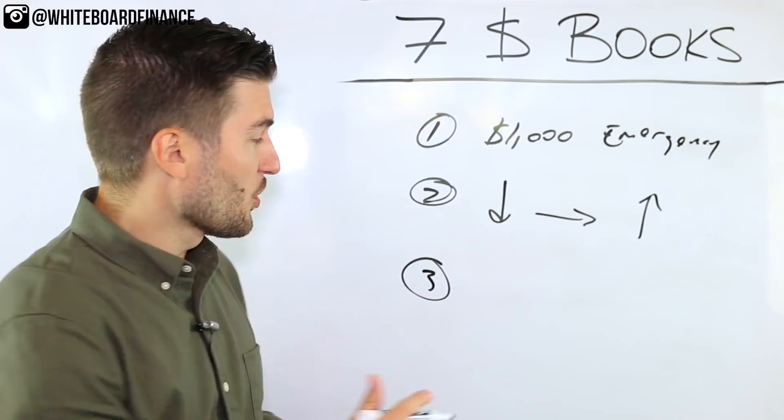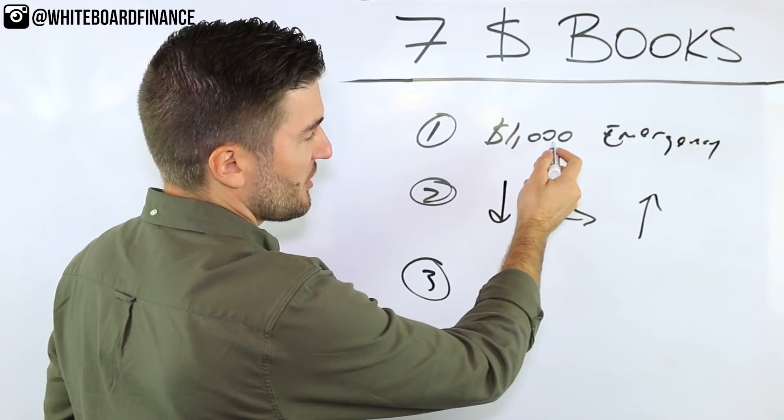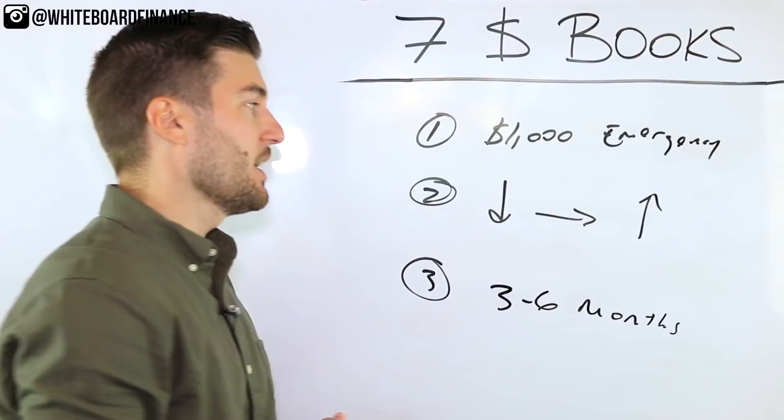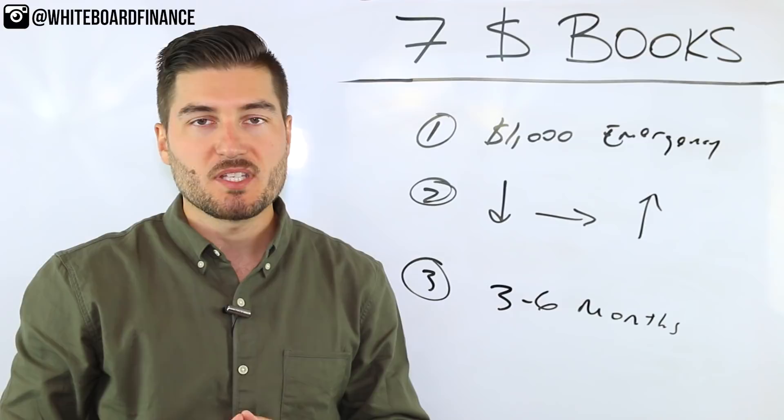And then finally, growing your emergency fund. So basically, once you pay off your debt, you're going to start adding to this $1,000 till you get to three to six months of living expenses. So that's pretty much it's not the entire total money makeover in a nutshell. It's only three of the steps. However, those are three important steps that I took away from the book.